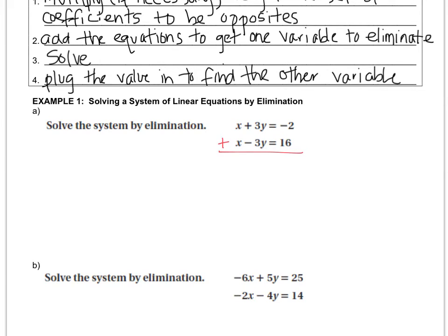So when you add, you add straight down. x plus x, well remember that's 1x plus 1x, that would be 2x. And positive 3 plus negative 3 cancels out, so the y's go away. And then negative 2 plus 16 is 14. So step three is to solve. I'll divide by 2, and the value of x is 7.